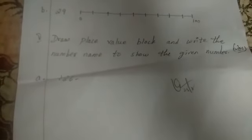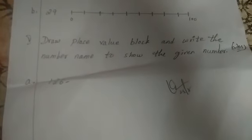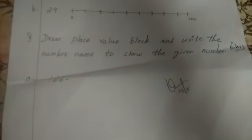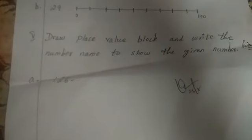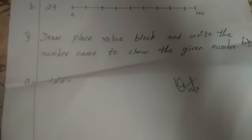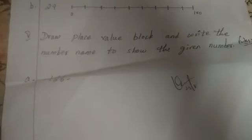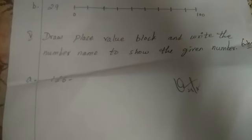And the last is, draw place value block and write number name to show the given number. First one is 126, children. 126, you have to draw place value, then you have to write the number name. Okay children.